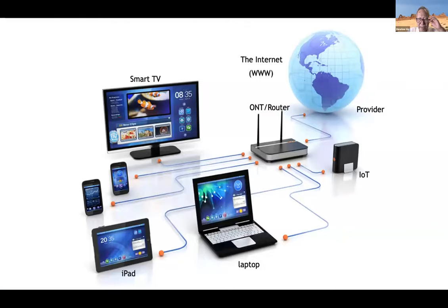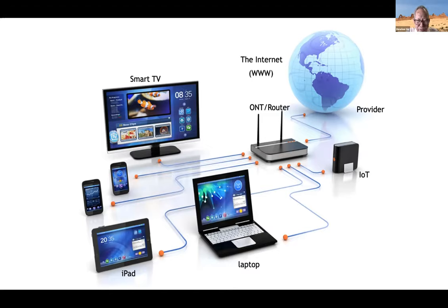This is a typical home in graphic form. The provider will provide you an ONT. Sometimes the ONT and router come together in one black box, and sometimes they are in two separate units. You can check your home to see which version you have. In the older days, they gave two boxes — one ONT and one router. I think later they combined them into one.